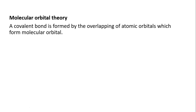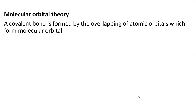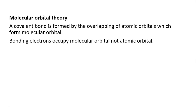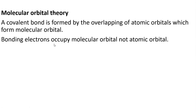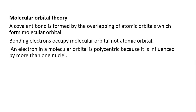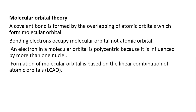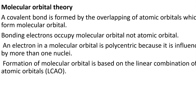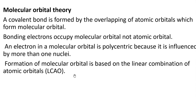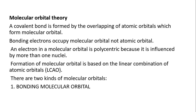Molecular orbital theory: a covalent bond is formed by the overlapping of atomic orbitals which form molecular orbitals. Bonding electrons occupy molecular orbitals, not atomic orbitals. An electron in a molecular orbital is polycentric because it is influenced by more than one nucleus. Formation of molecular orbitals is based on the linear combination of atomic orbitals. There are two kinds of molecular orbitals: bonding molecular orbitals and antibonding molecular orbitals.